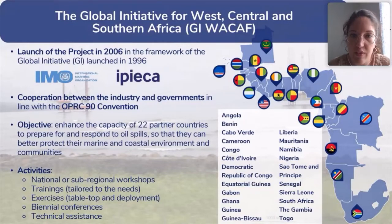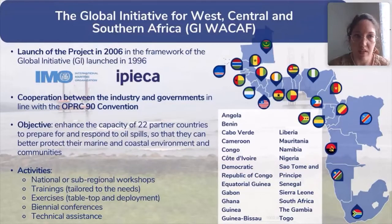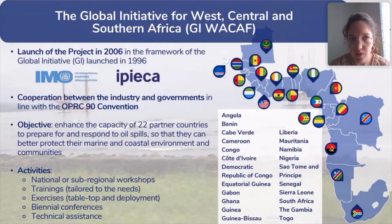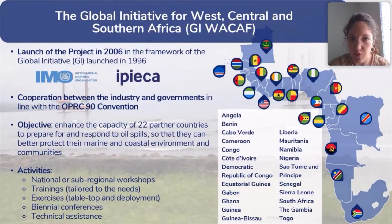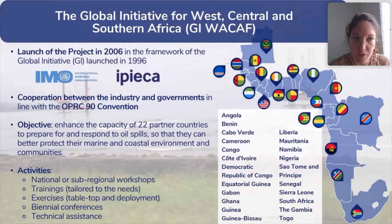JIWAKA stands for the Global Initiative for West, Central and Southern Africa. The project was launched in 2006 in the framework of the Global Initiative, which was launched in 1996 by IMO and IPIECA. IMO is the International Maritime Organization, the UN specialized agency responsible for navigation safety and protection of the marine environment. IPIECA is the oil and gas industry association for improving social and environmental performance. The aim of the JIWAKA project is to promote cooperation between governments and industry in the spirit of the OPRC 90 Convention — the International Convention on Oil Pollution Preparedness, Response and Cooperation.